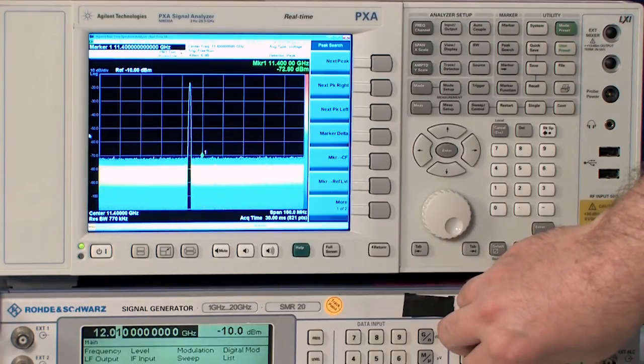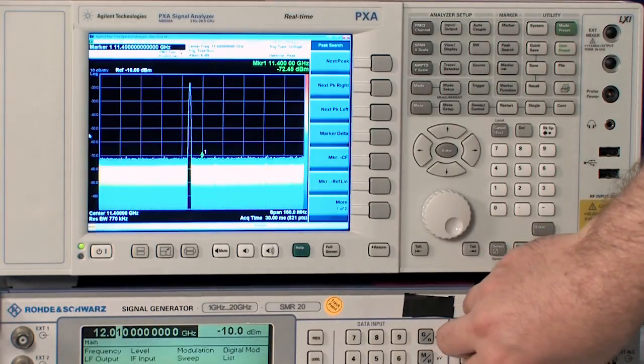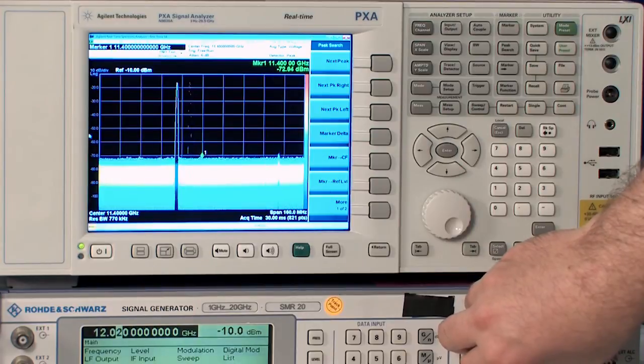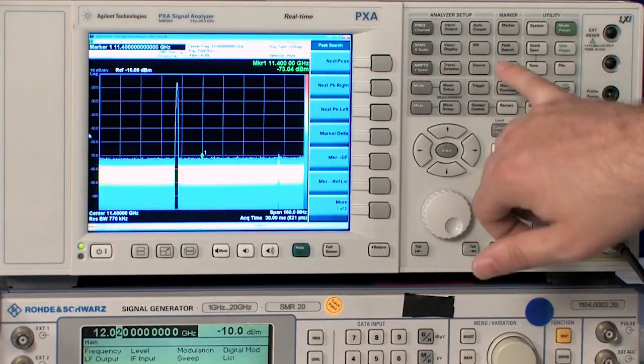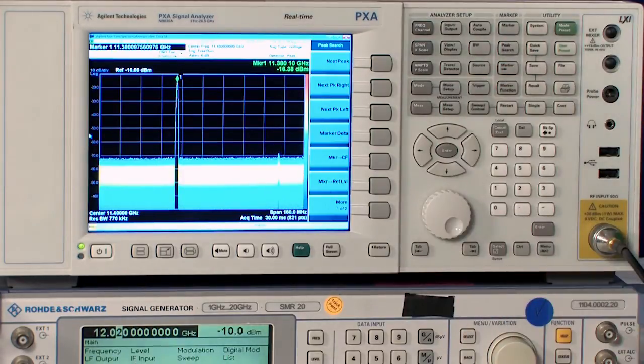And I see an image of the signal at 11.4 gigahertz. Again, as I vary the frequency upwards to 12.01 gigahertz, and then to 12.02 gigahertz, I see the image frequency actually shows up at 11.38 gigahertz. The point here is I'm looking at an image of the 12 gigahertz signal that's being produced inside the PXA.